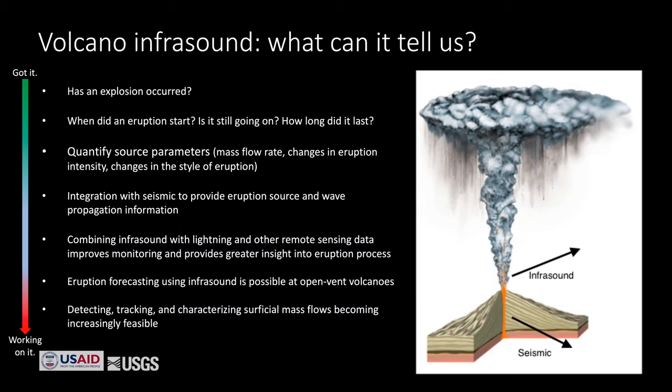A good example was during the 2016–2017 eruption of Bogoslof, which produced a lot of lightning, and more recently the Kelud eruption in Indonesia. Getting further down into things we're working on: eruption forecasting. Typically infrasound has been a detection tool, not a forecasting tool, but at open-vent volcanoes there have now been a few case studies showing it does seem possible to detect subtle changes associated with degassing or magma movement in an open conduit, allowing relatively short-term forecasting.